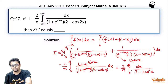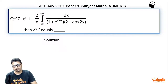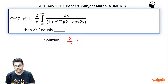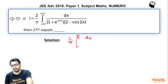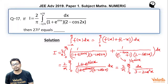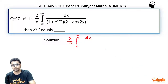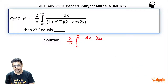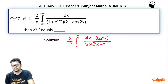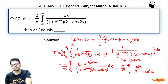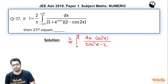Continuing, I = 2/π ∫₀^(π/4) dx/(3 − 2cos²x). We divide numerator and denominator by cos²x, which gives sec²x in the numerator and 3sec²x − 2 in the denominator.